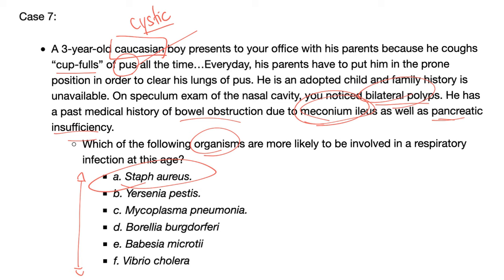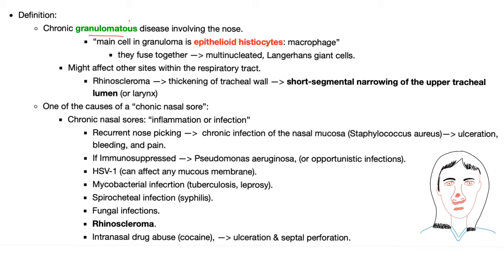Rhinoscleroma is a granuloma. If it's a granuloma, the main cell is the epithelioid histiocyte, or the macrophage, and you'll have multinucleated Langhans giant cells. It can affect any site of the respiratory tract — it's common in the nose, but it can also affect the trachea, causing short segmental narrowing of the upper airway tract.